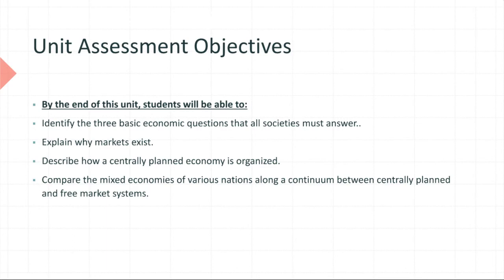We will describe how a centrally planned — meaning a governmentally planned — economy is organized. In most parts of the world, the market system is prevalent, but in the past, as you may have read in World History 1 and 2 or geography, the Soviet Union is one example of a centrally planned economy, where a few people are in charge of oversight for the entire nation.